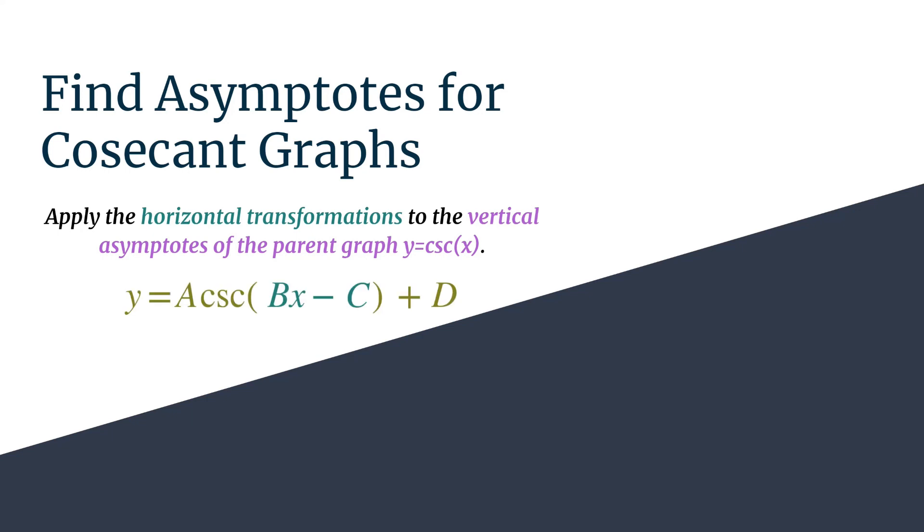Here's the general form equation for a cosecant graph, and the horizontal transformations are simply the inputs of the cosecant function, so the terms in the box. Whatever you see within that parentheses of the cosecant term, that's what you want as your first part.